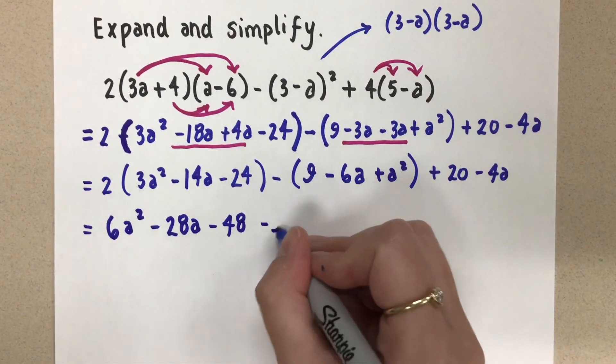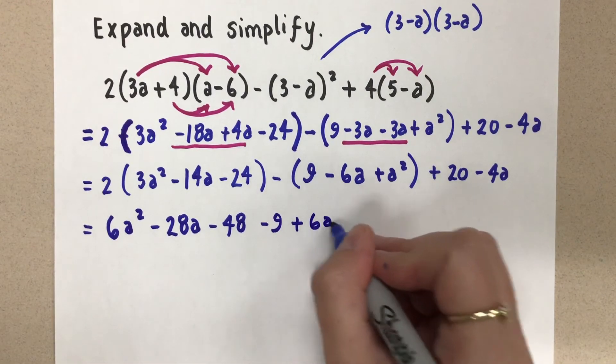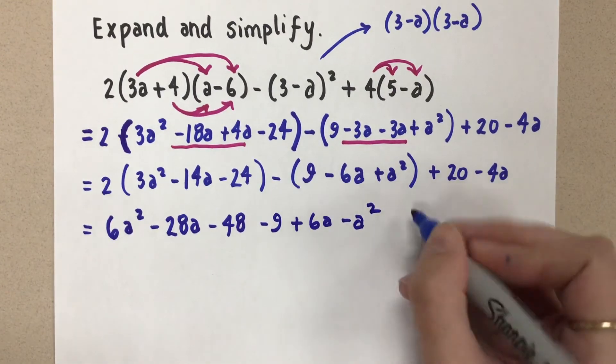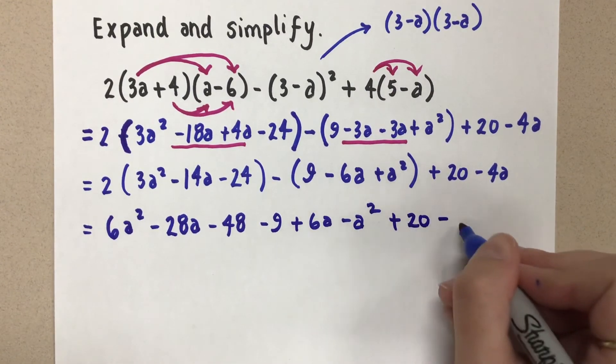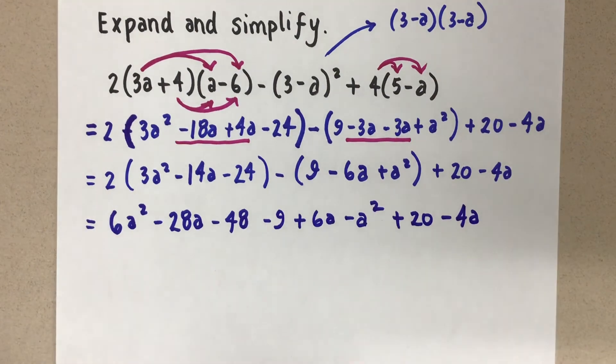Let's distribute the negative 1 now. So minus 9 plus 6a minus a squared. And then we have the plus 20 and minus 4a.